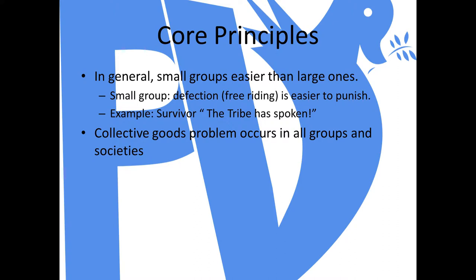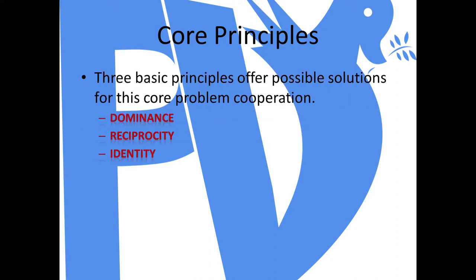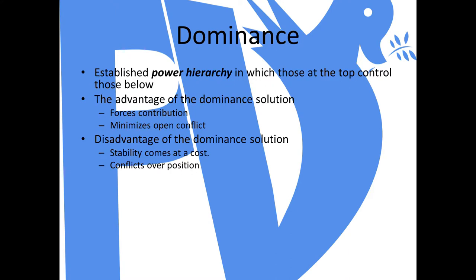So how is the free rider issue addressed at the international level? There are three basic principles that try to offer possible solutions for this core problem of getting actors to cooperate for the common good without a central authority to make them do so. These three principles are dominance, reciprocity, and identity.